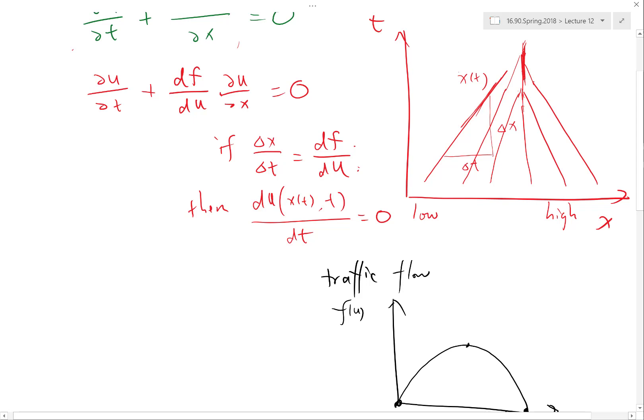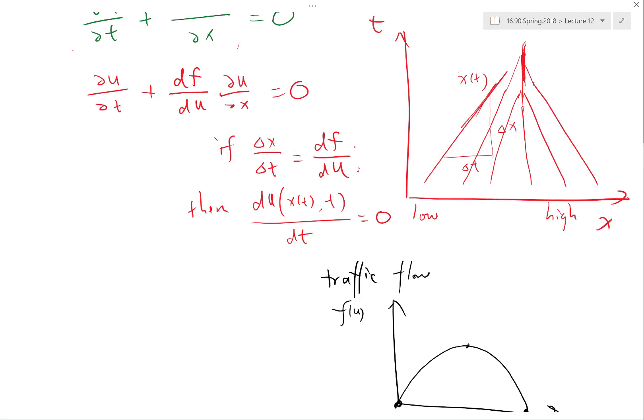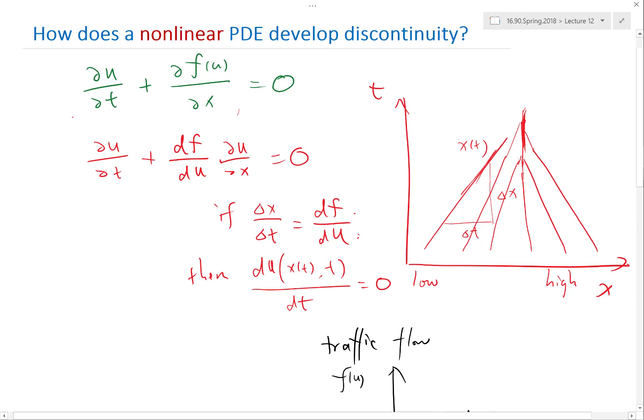That's how shocks form in aerodynamics. That's how, in the flow of water, a high-speed region can collide forming a sharp wave — that's how solutions to the shallow water equations develop discontinuities. That's also how shockwaves form in traffic flow. And in reservoir engineering, where people extract oil from the ground, they also get shockwaves — which they call fronts — where the concentration of different species becomes sharply different. This is how nonlinearities develop discontinuities in nonlinear PDEs.